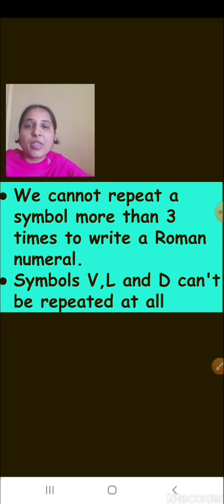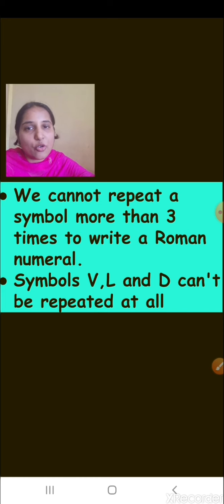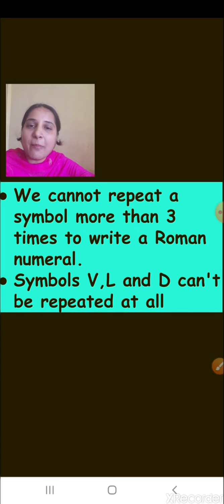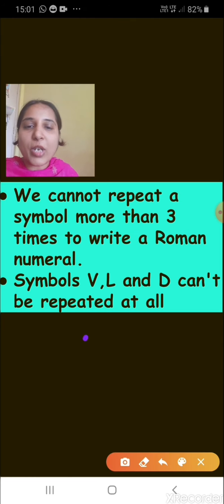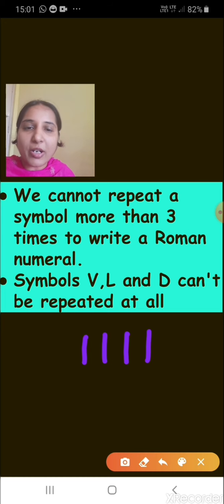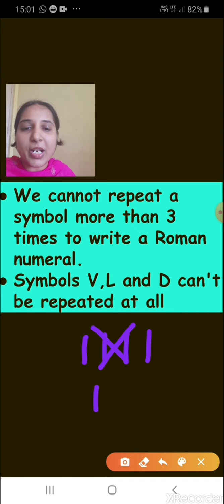There are certain rules while writing numbers in Roman numerals. Rule 1: we cannot repeat a symbol more than 3 times to write a Roman numeral. For example, since you are in standard 4, you cannot write it as IIII — writing I four times is wrong. So how do you write number 4 in Roman numerals? You write it like IV.